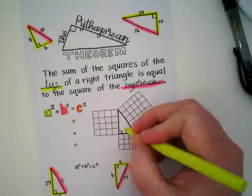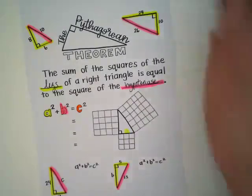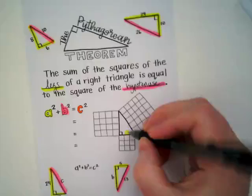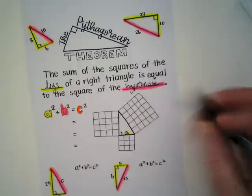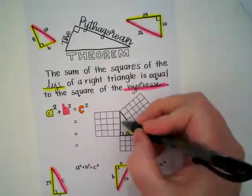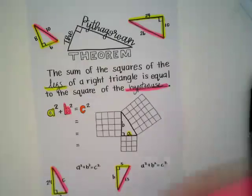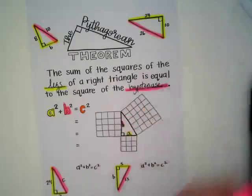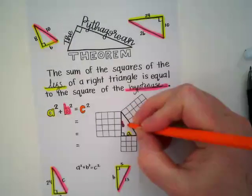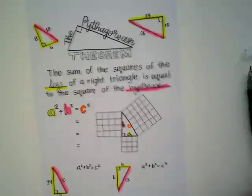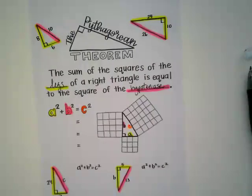So let's label this one A. My highlighter is not showing that A very well. And this one is B. And that leaves this as our hypotenuse C. And we're going to prove that Pythagoras' theorem works.